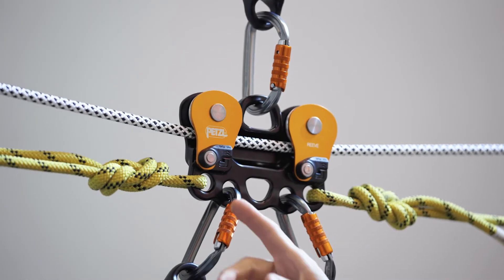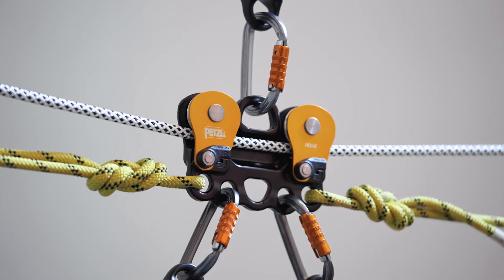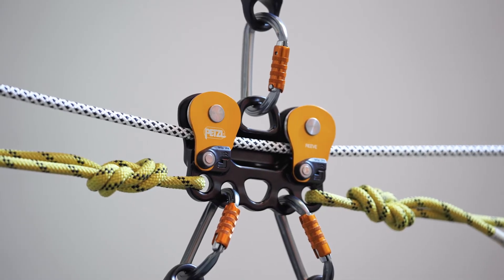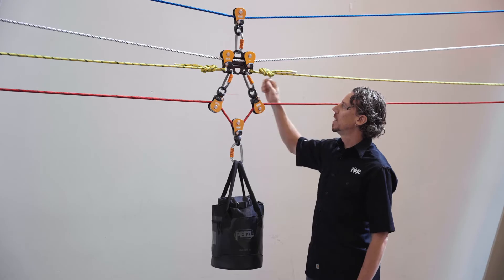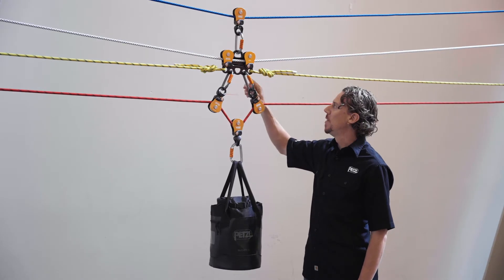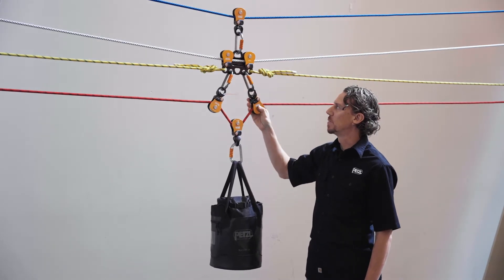There are five lower attachment holes which allow for multiple rigging options. In a high line application, the control lines are typically connected to the outer holes and the inner holes are used to connect the pulleys for the Reeve system.